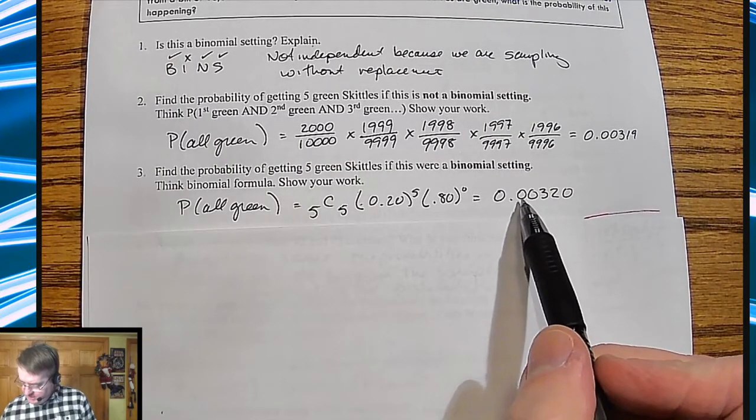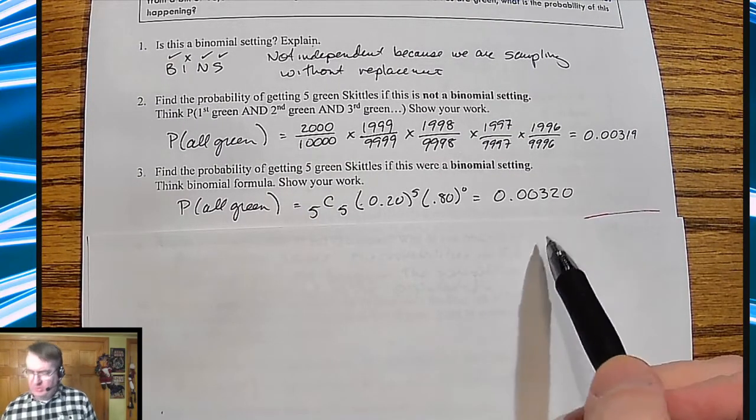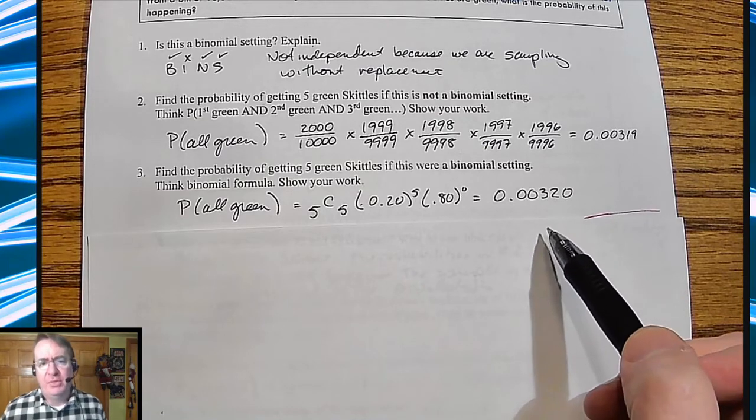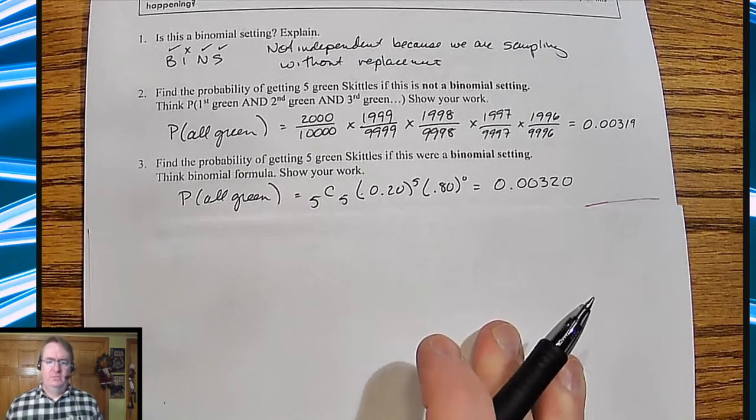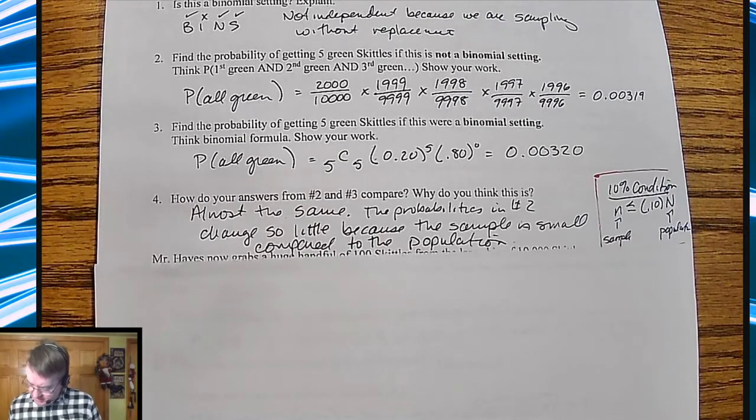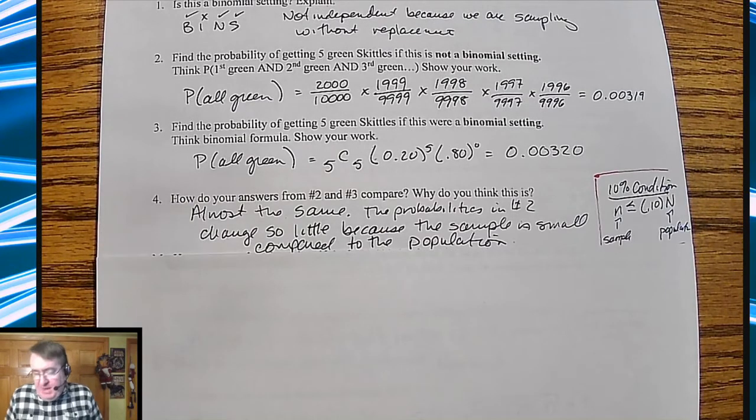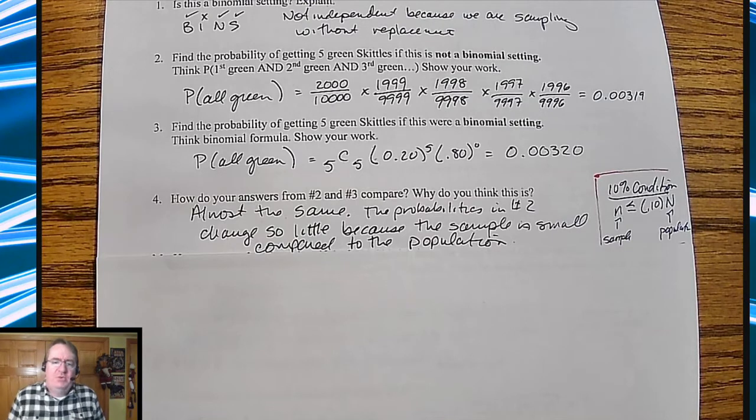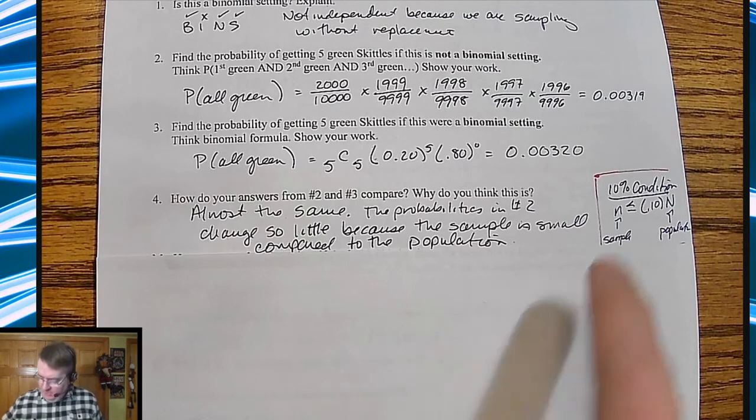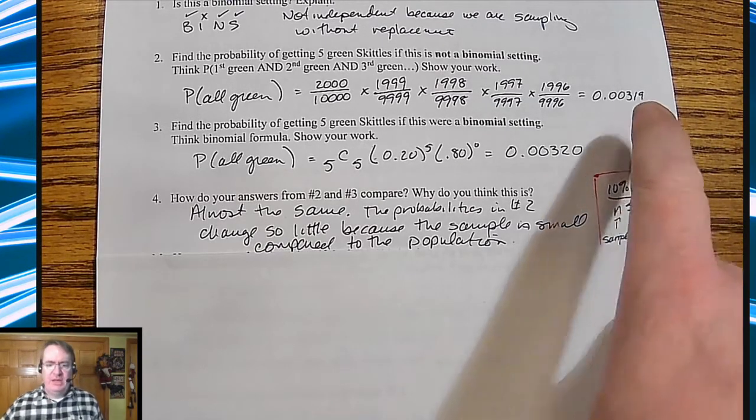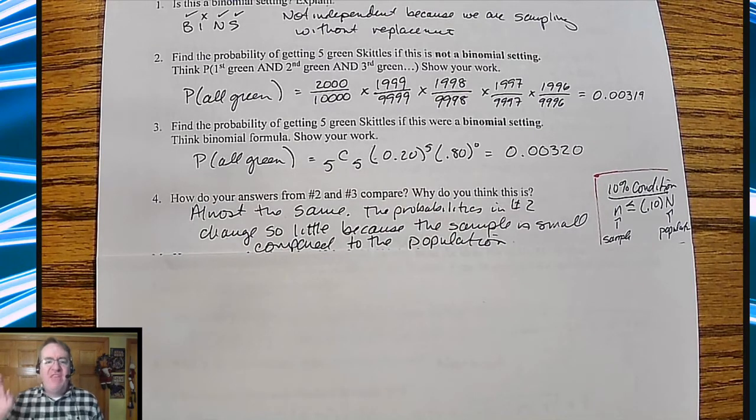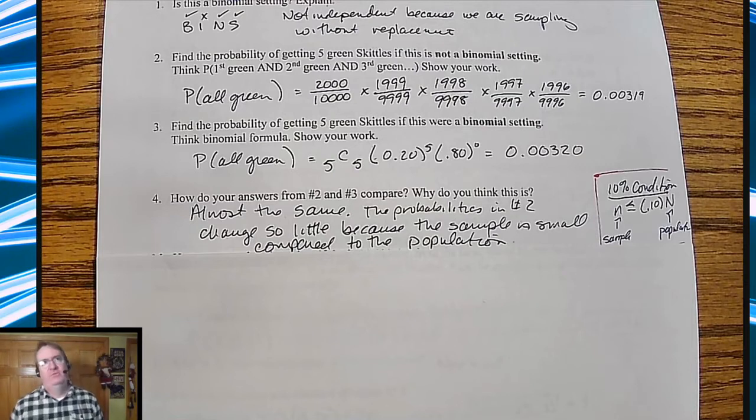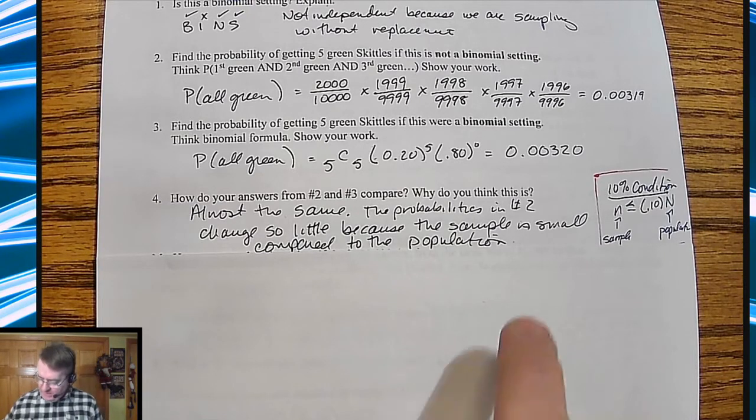Yeah, because what, tenths, hundred-thousandths, ten-thousand? Yeah, so you're only off by one one-hundred-thousandth. So and that's what you actually say down here. So what do you answer? Just compare the two. This is basically the same, but the reason why is probabilities number two changed a little because we have a sample of five out of ten thousand Skittles. Okay, so that'd be what, five out of ten thousand, ten out of twenty thousand? Yeah, I mean, so you're talking about like 0.5 hundredths of a percent.